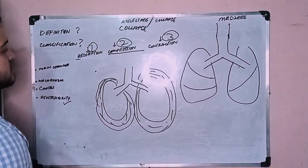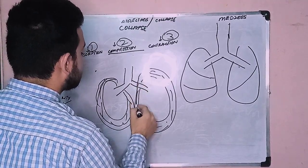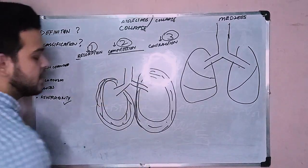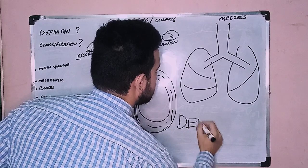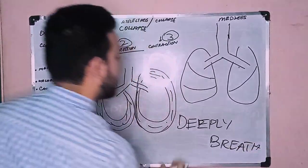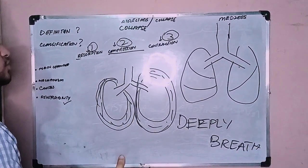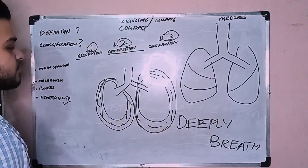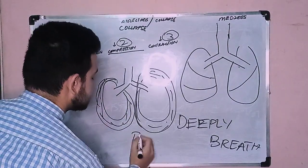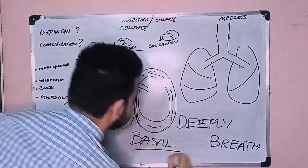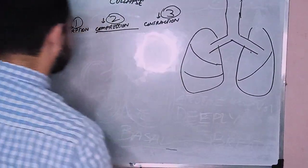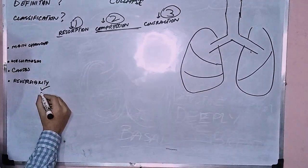There is another form of compression atelectasis where the patient cannot breathe deeply. These patients are bedridden patients, or patients going through surgery and immediately after surgery. This is called basal atelectasis, as written in Robbins. Compression atelectasis is also reversible.